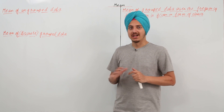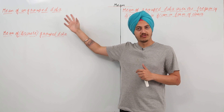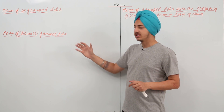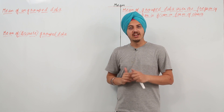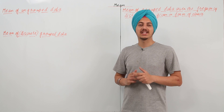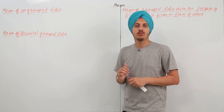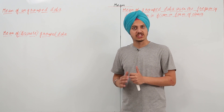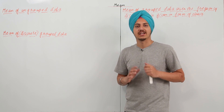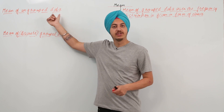I will only be telling you the names of the methods and explaining what those kinds of data are. To understand what these methods are, we will follow a few questions, and through those questions you will understand what these methods actually are. So first is the mean of an ungrouped data.